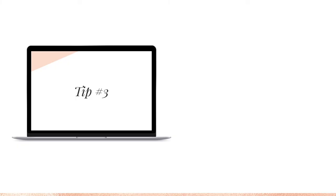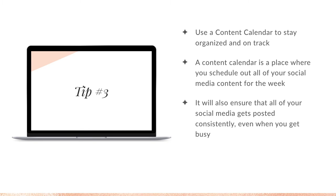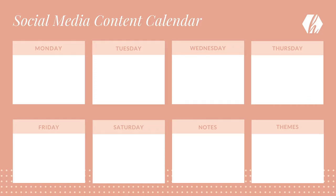Tip number three: use a content calendar to stay organized and on track. A content calendar is a place where you schedule out all of your social media content for the week. It also ensures that all of your social media gets posted consistently, even when you get busy. A content calendar for a real estate agent covers Monday through Saturday — I left Sunday off because maybe you want to take that time with your family. You can swap Saturday for Sunday if you want to.